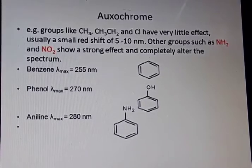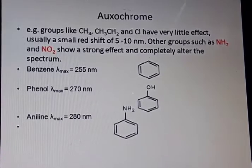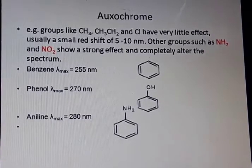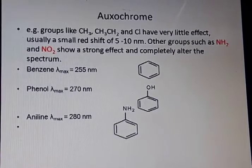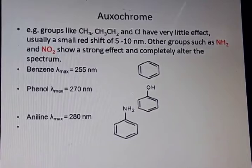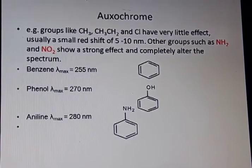Other groups such as NH2 and NO2 show a strong effect and completely alter the spectrum. For example, benzene, phenol and aniline: the lambda max of benzene is 255 nm, while phenol is 270 nm and aniline is 280 nm, due to the presence of OH and NH2, which act as oxochromes.